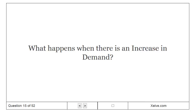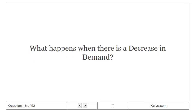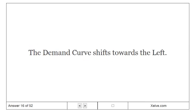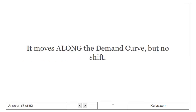What happens when there is an increase in demand? The demand curve shifts towards the right. What happens when there is a decrease in demand? The demand curve shifts towards the left. What does a change in price do to the demand curve? It moves along the demand curve, but causes no shift.